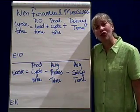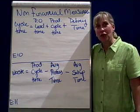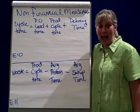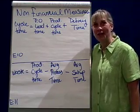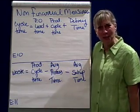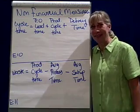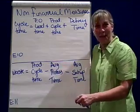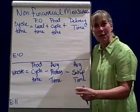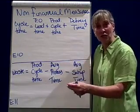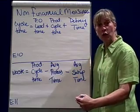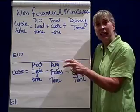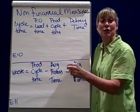One is called cycle time. Cycle time says: from the time the customer says 'I want it,' to the time the customer has a smile on their face because they're so delighted with their product — how long does that take? So cycle time is made up of purchase order lead time, which is the time it takes the customer to place the order and for the business to receive that order and get it in queue to be produced.